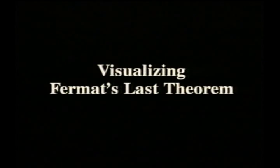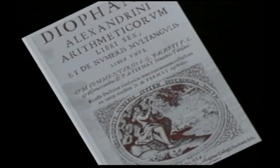In the margin of an ancient book, the 17th century mathematician Fermat stated that the equation x to the n plus y to the n equals z to the n cannot be solved with non-zero integers x, y, z for any integer power n greater than 2.